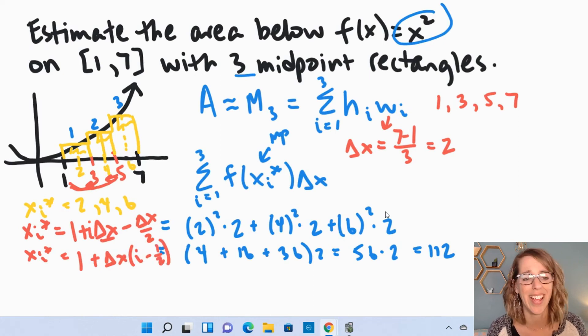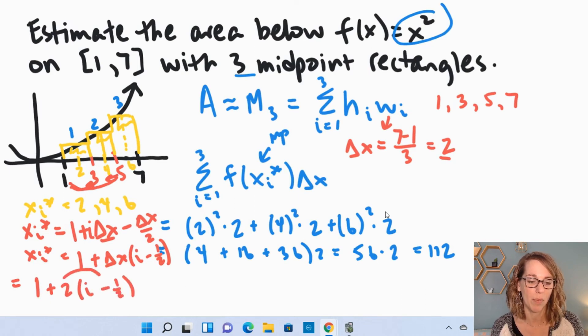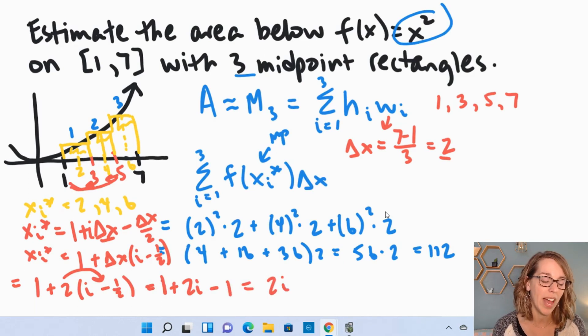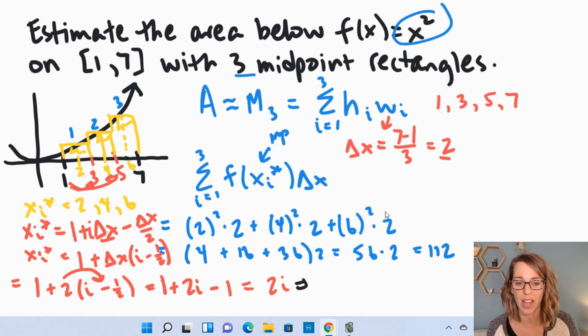In our case, delta x is 2. So as I simplify this, I get 1 plus 2i minus 1 half. Simplifying this for our problem, I can bring that 2 through, and I get 1 plus 2i minus 1, and this simplifies really nicely to be 2i.